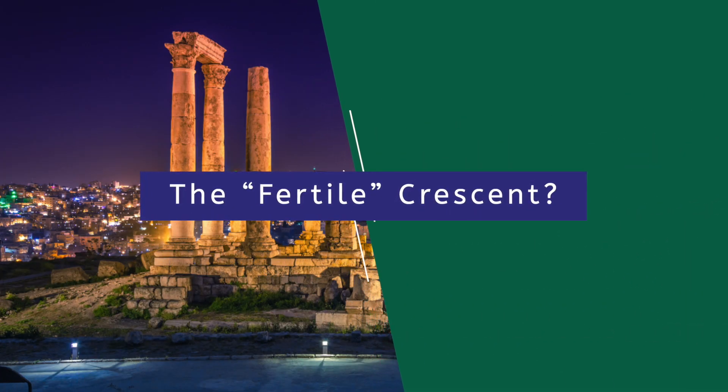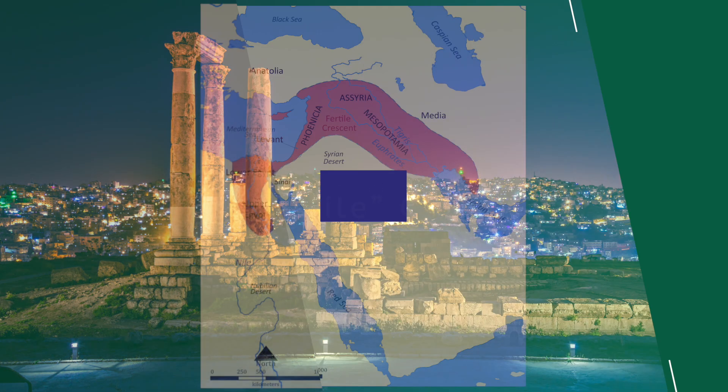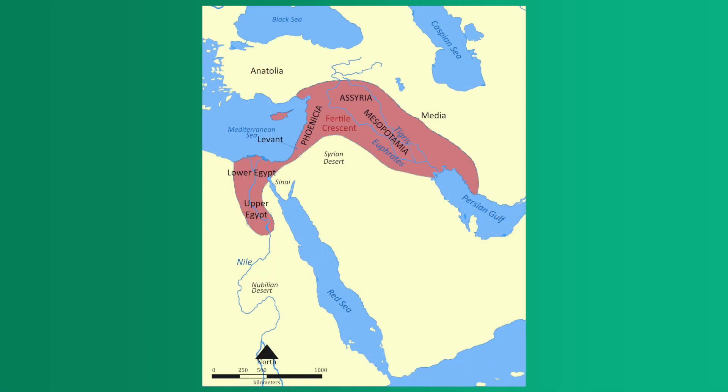The Fertile Crescent — so what gives with the name? It's pretty obvious, apart from the rivers, that this area is the opposite of fertile. So let's be geographers. Take a brief pause here, look at the map, and make a prediction.